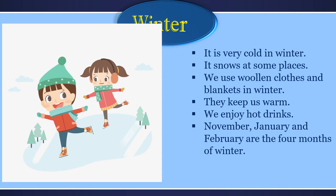March, April and May are the summer months. Then June, July, August and September are the monsoon season. And then November, December, January and February are the winter months. Now February has ended and March has started, so now it is summer season.